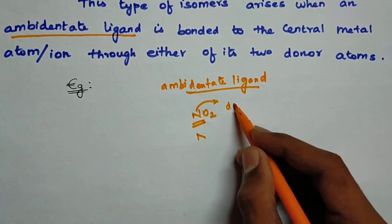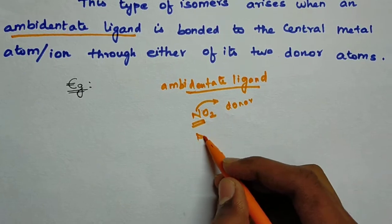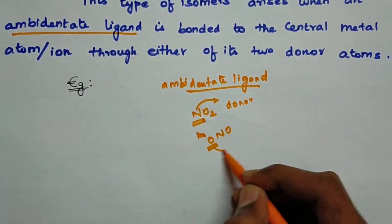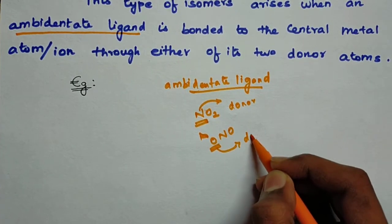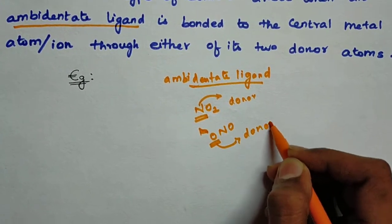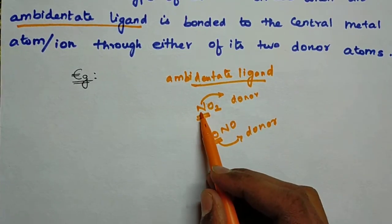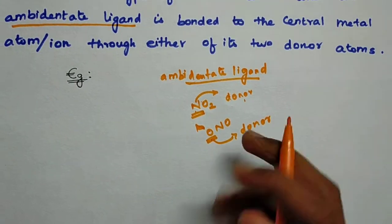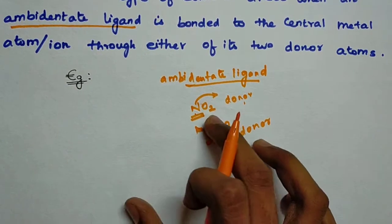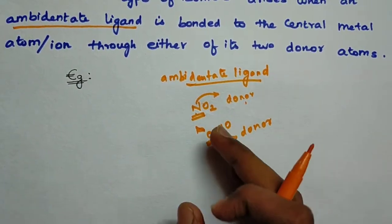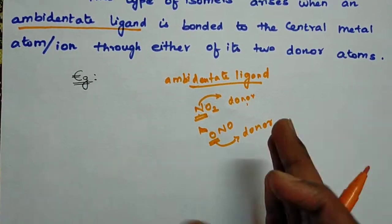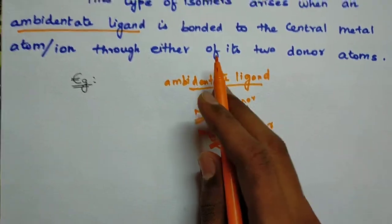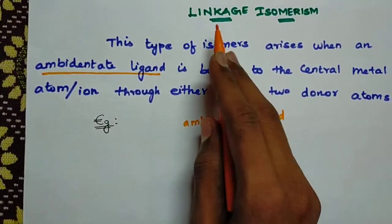An ambidentate ligand has two atoms which can act as donor atoms. For example, NO2 has two donor atoms: nitrogen and oxygen. When this ligand bonds to the central metal through either of its two donor atoms, the resulting isomers are called linkage isomers.